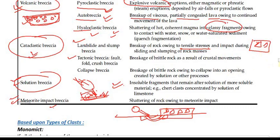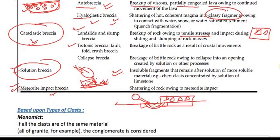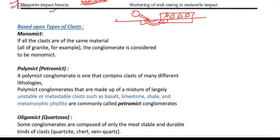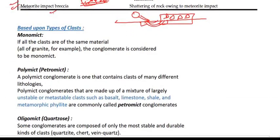So these are the different types of conglomerate and breccia based on genetic classification.